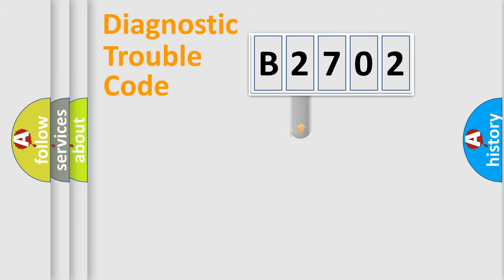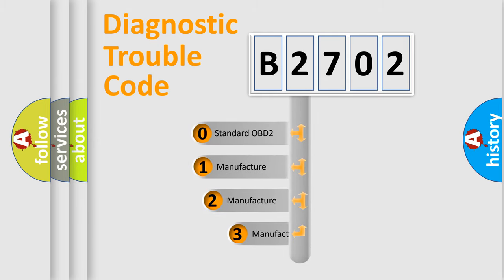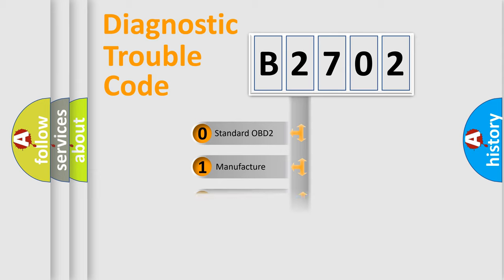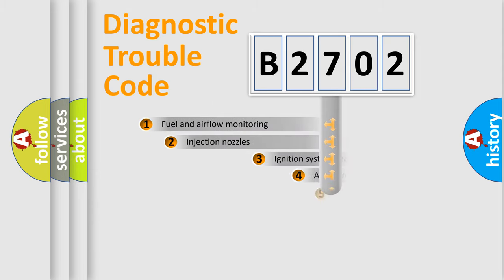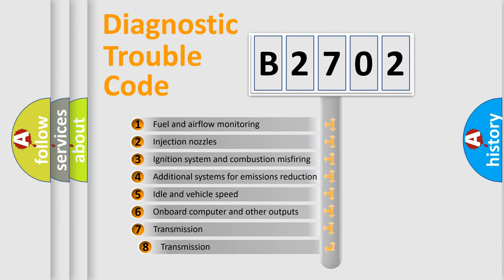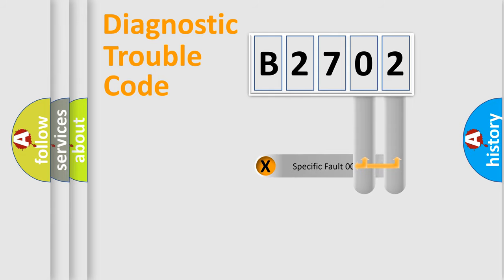This distribution is defined in the first character of the code. If the second character is expressed as zero, it is a standardized error. In the case of numbers 1, 2, or 3, it is a manufacturer-specific expression of the error. The third character specifies a subset of errors. The distribution shown is valid only for the standardized DTC code, and only the last two characters define the specific fault of the group.